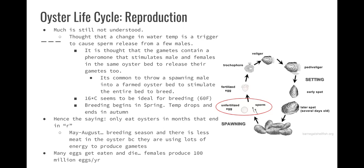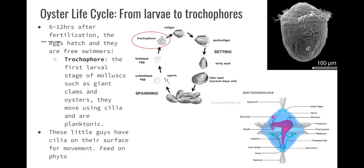Many eggs get eaten and die. Females will produce 100 million eggs a year. From larvae to trochophores: 6 to 12 hours after fertilization, your eggs are going to hatch and they're free swimmers. A trochophore is the first larval stage of a mollusk — same for a giant clam, same for an oyster. They have little cilia on them that allow them to move a little, but they're still planktonic. They feed on phytoplankton.